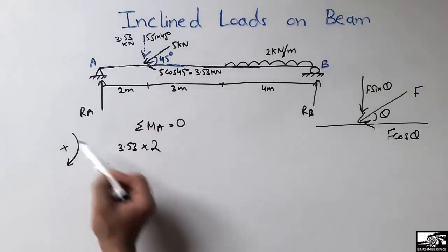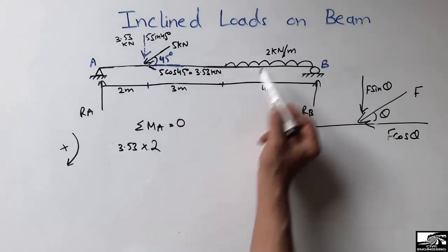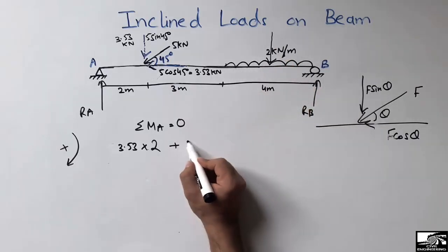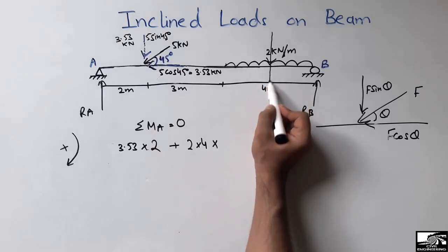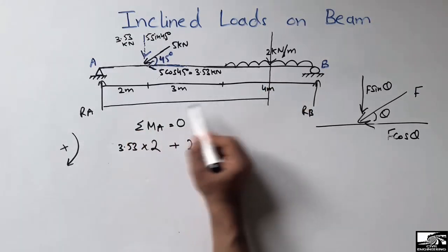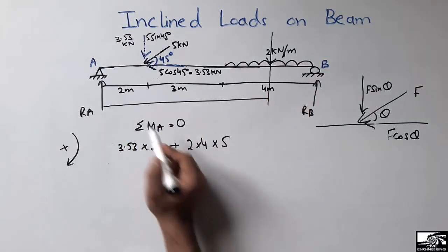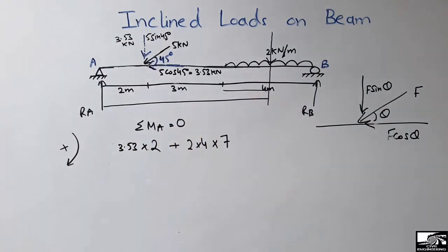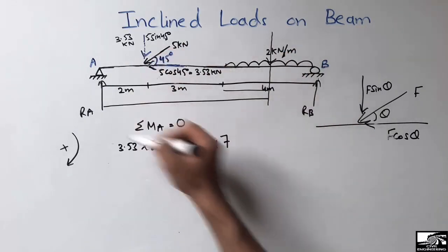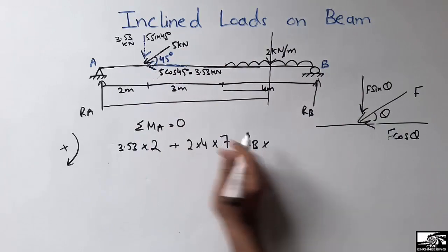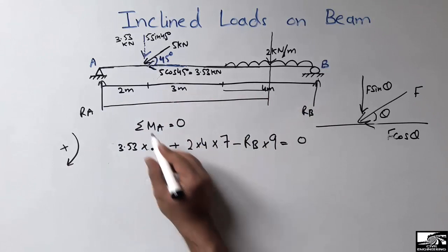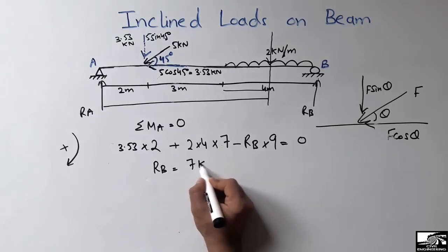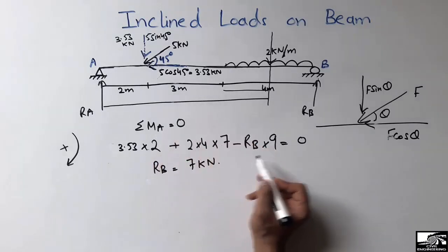The uniformly distributed load also acts in the positive direction. Its concentrated equivalent is 2 × 4 kN, and the moment arm from point A is 7 meters. RB acts in the anticlockwise direction with a moment arm of 9 meters. Setting the sum of moments equal to zero, RB comes out to be 7 kN.